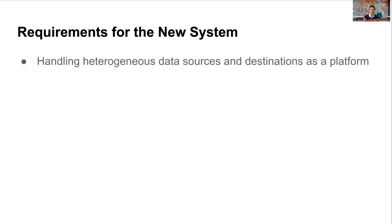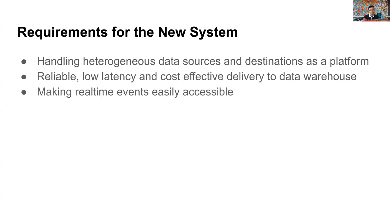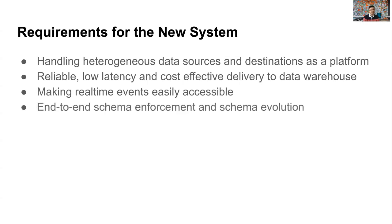The new system should support heterogeneous data sources, including microservices and mobile or web applications, and be able to deliver events to different destinations. It should provide low latency and reliable data ingest into our data warehouse with reasonable cost. Real-time events should be easily accessible for data consumers — we want to empower all users or teams to create their own processing logic and tap into streams of real-time data. And finally, to improve data quality, we want end-to-end schema enforcement and schema evolution.